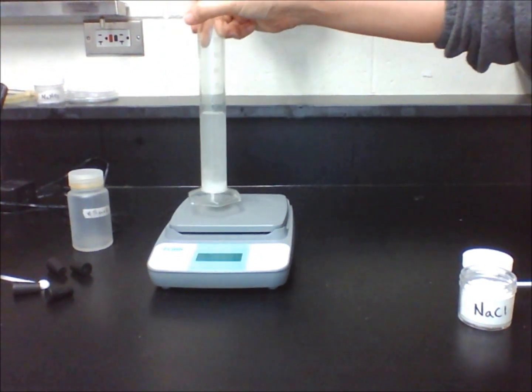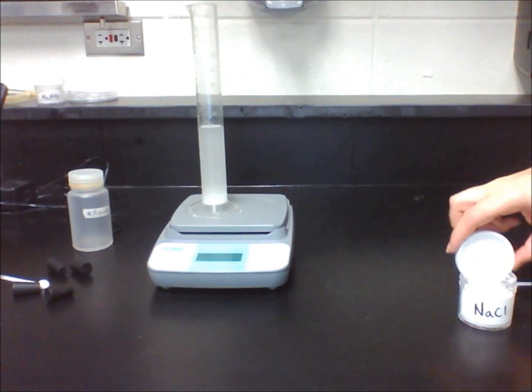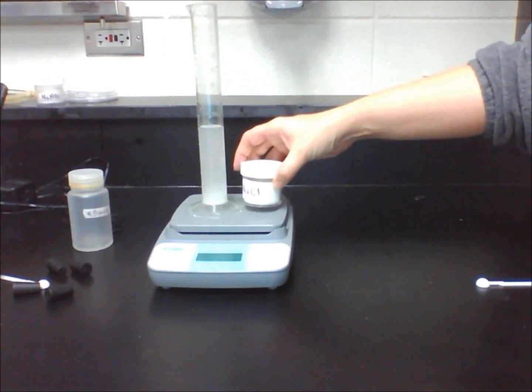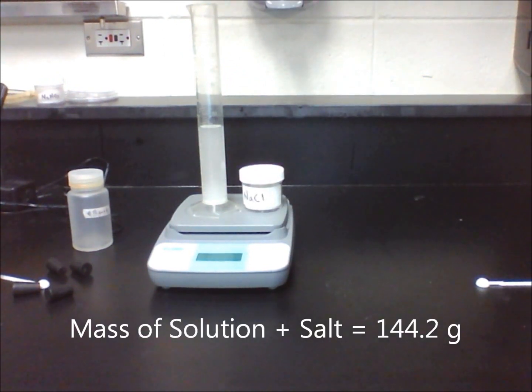Find the mass of the solution in the graduated cylinder and the container of salt. Be sure the lid is on the container of salt if you had it on in the first place so the results will not be changed due to incorrect measurement.